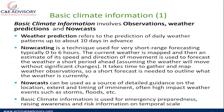Basic climate information involves observations, weather predictions, and what we call nowcasts. Weather prediction refers to the prediction of daily weather patterns up to about 10 days in advance. Nowcasting is a technique used for very short-range forecasting, typically between 0 to 6 hours. The current weather is mapped and an estimate of its speed and direction of movement is used to forecast the weather a short period ahead, assuming the weather will move without significant changes.